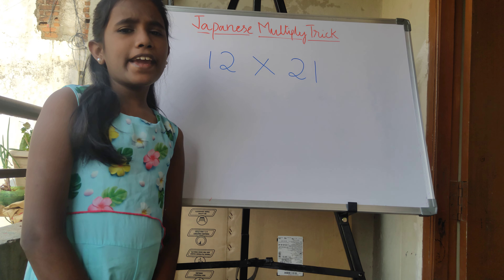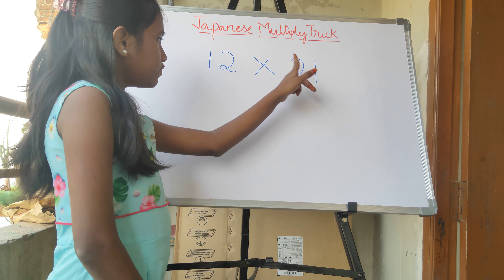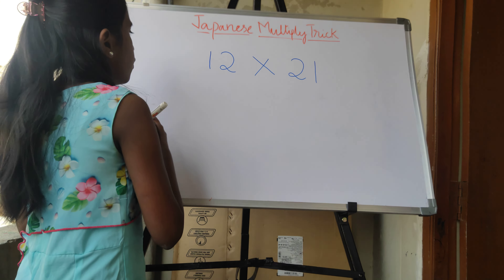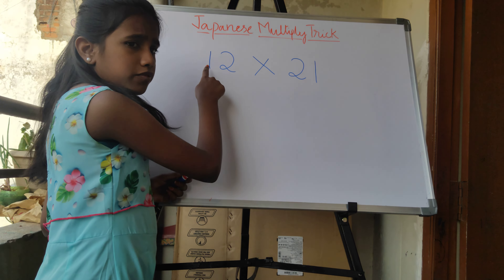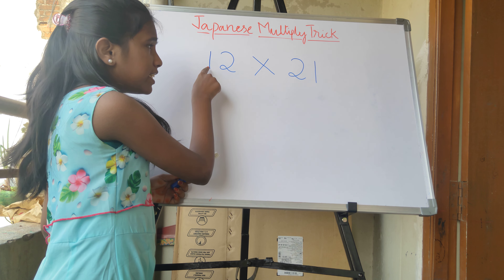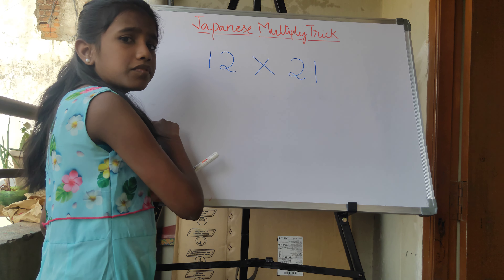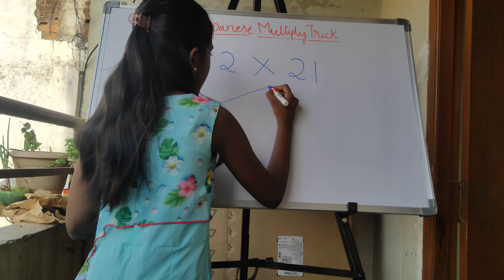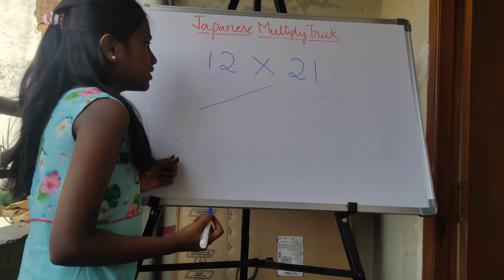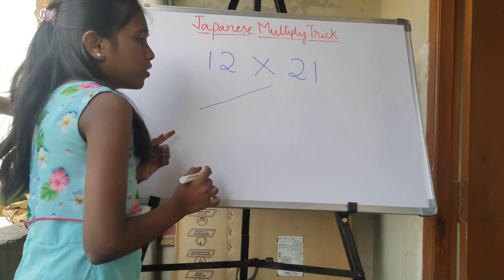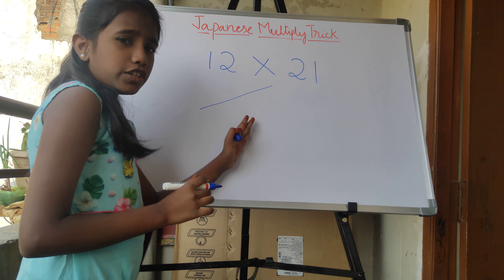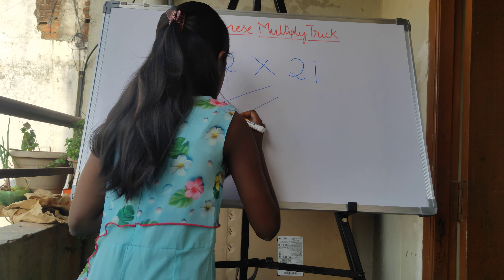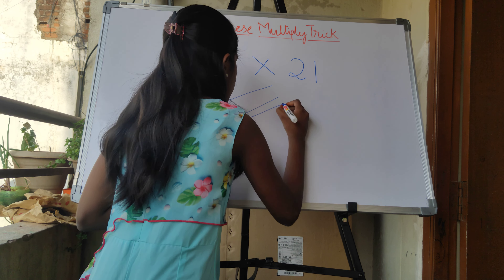So let us take an example of 12 into 21. First we have to show here: the first number is 1, so we have to draw one line. Next, 2 — we have to give some gap and draw two lines: 1 and 2.